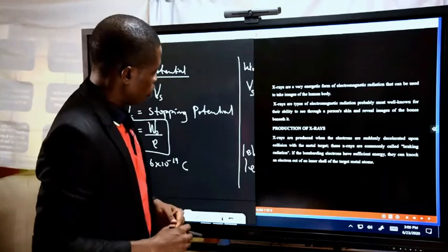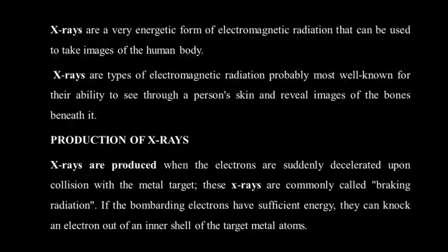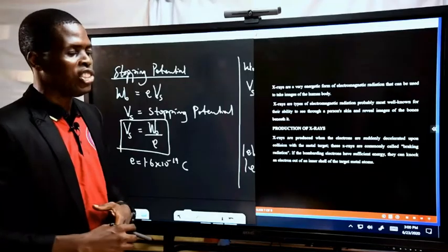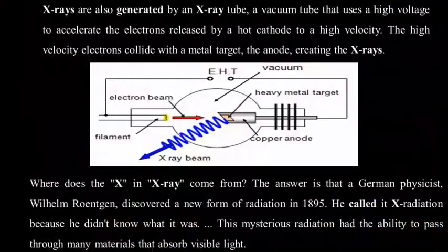Now we want to look at the term X-ray. X-rays are a very energetic form of electromagnetic radiation that can be used to take images of the human body. X-rays are types of electromagnetic radiation probably most well-known for their ability to see through a person's skin and reveal images of the bones beneath it.